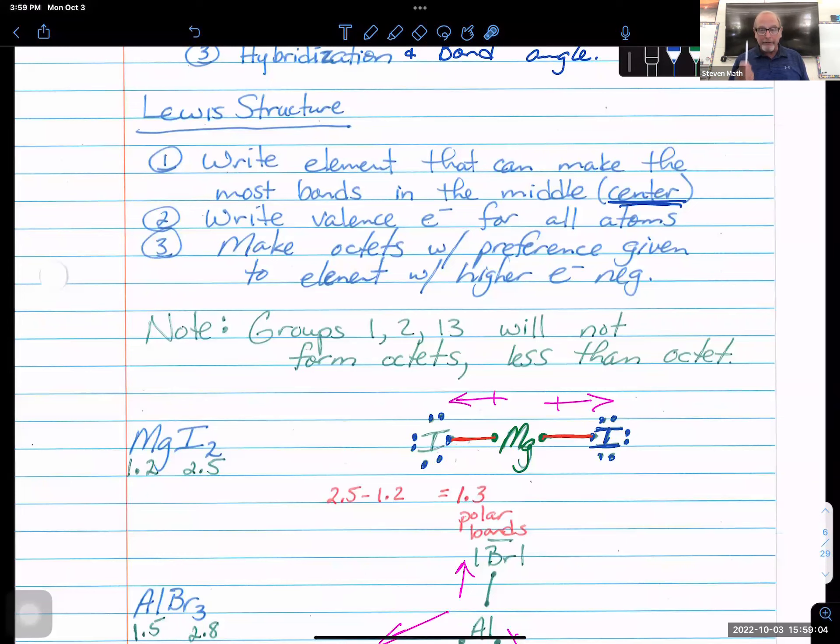So the element that makes the most bonds will be written in the middle. When we look at a chemical formula, often the central atom will be written first. So look for that as kind of a clue. Then we're going to write valence electrons for all the atoms. Now you guys, I've done this so long. And this is the step that students don't want to do. They just want to start writing out atoms and start drawing bonds and connecting things. Please write the dots and connect the dots.